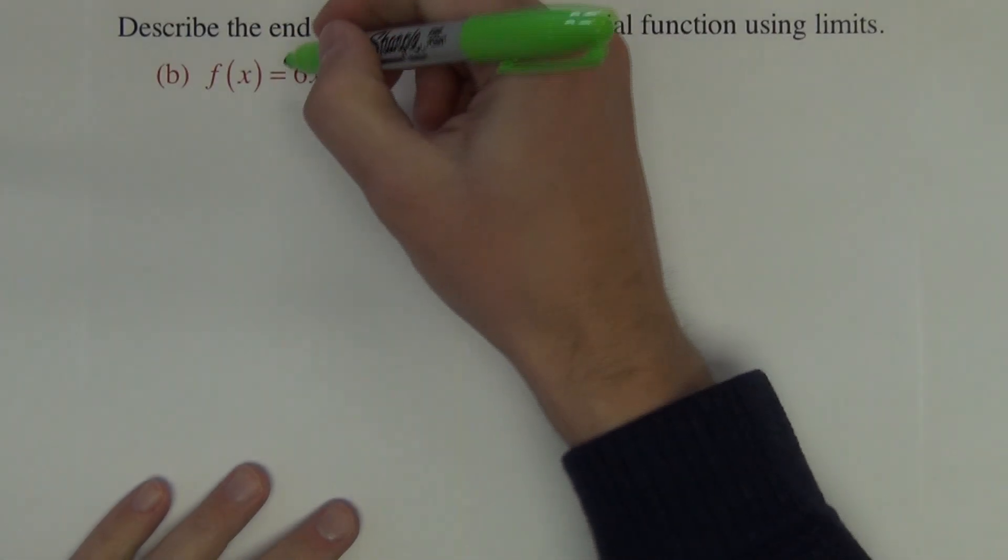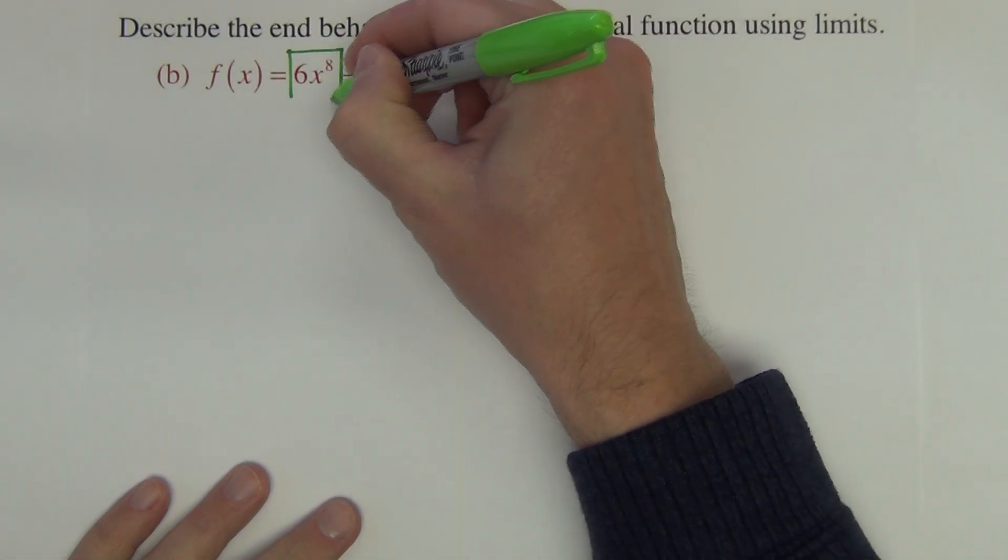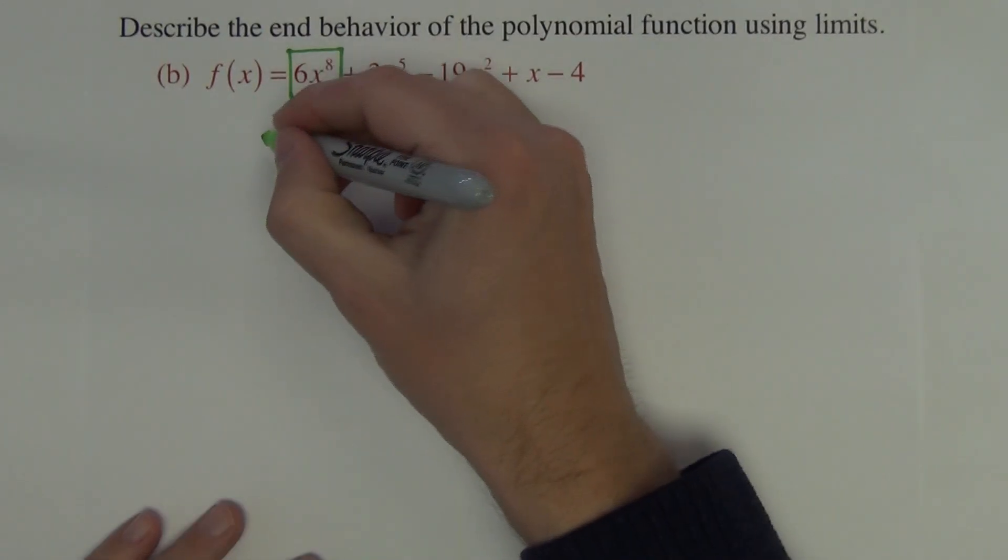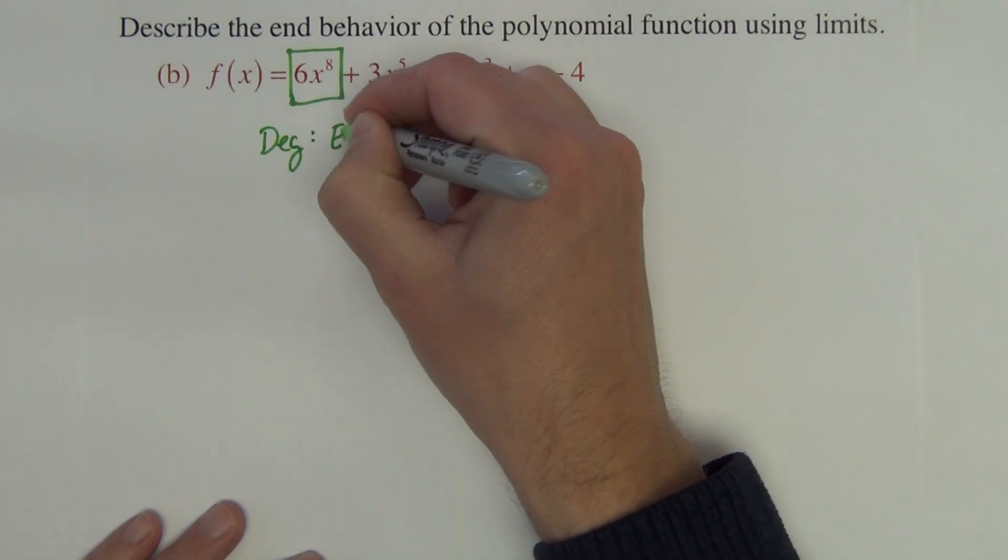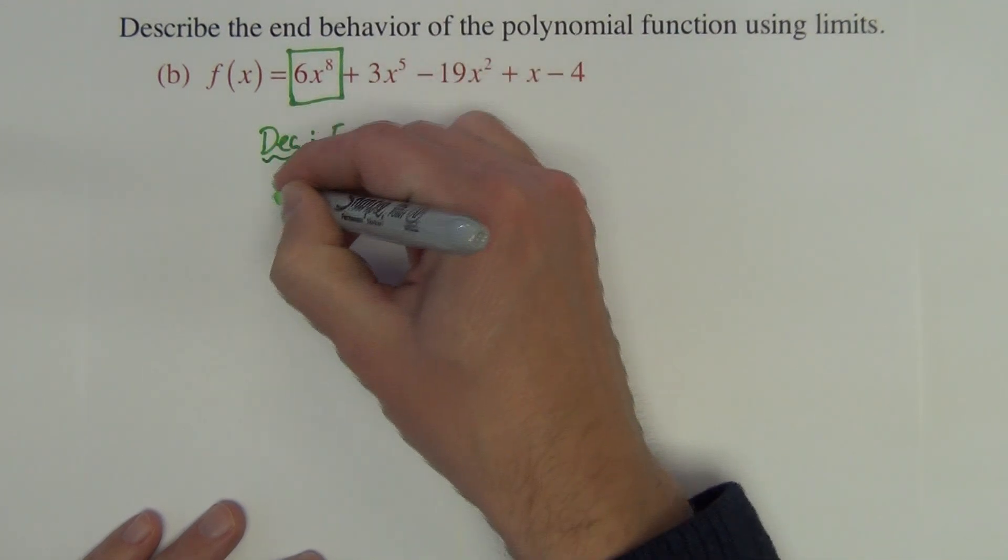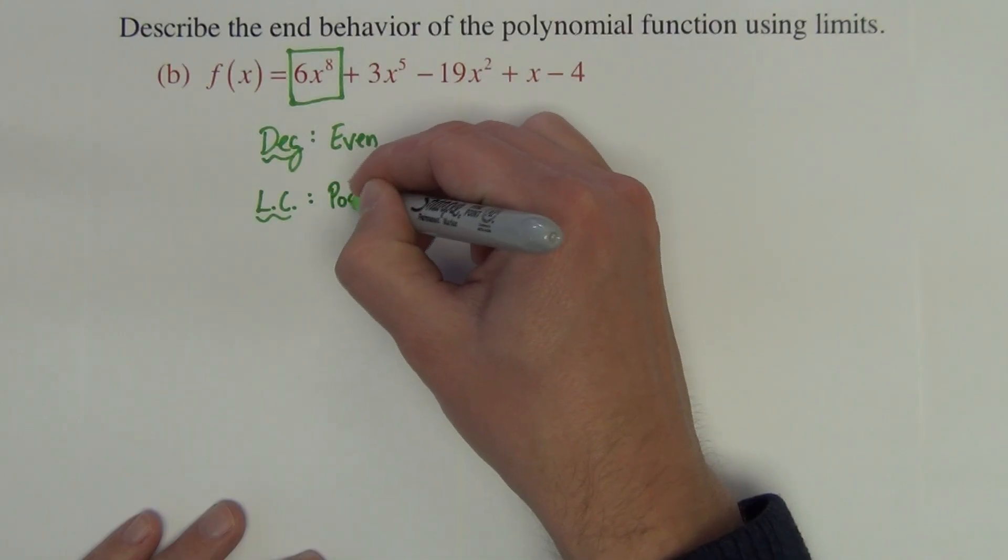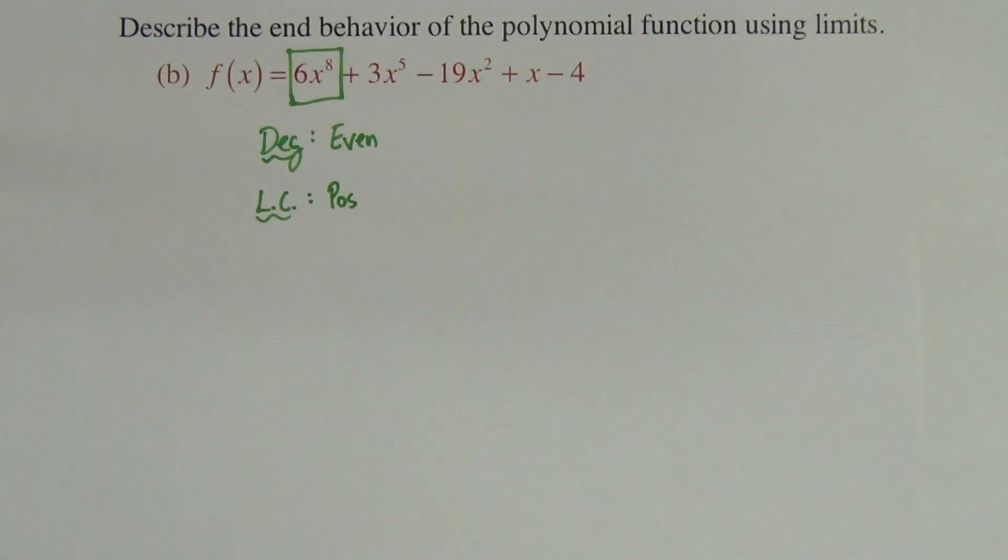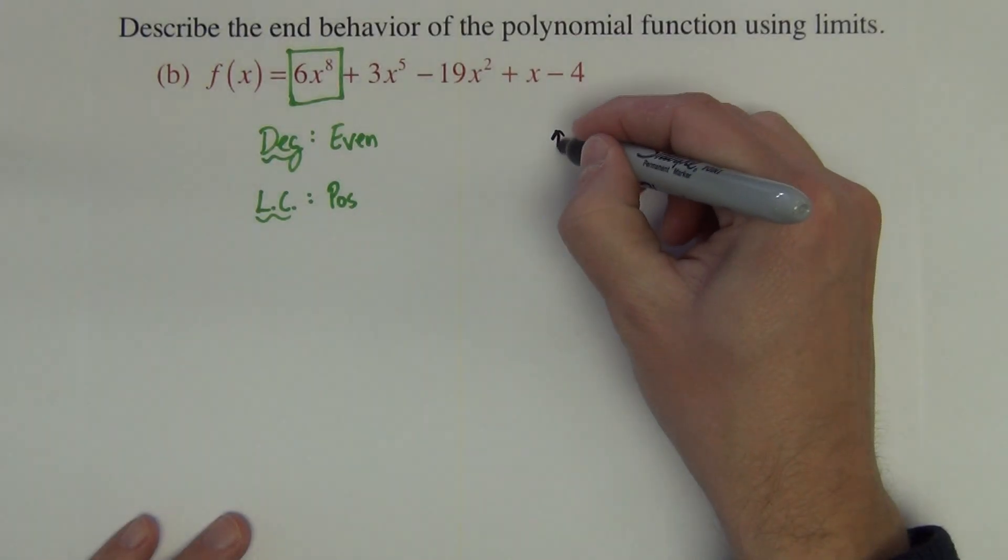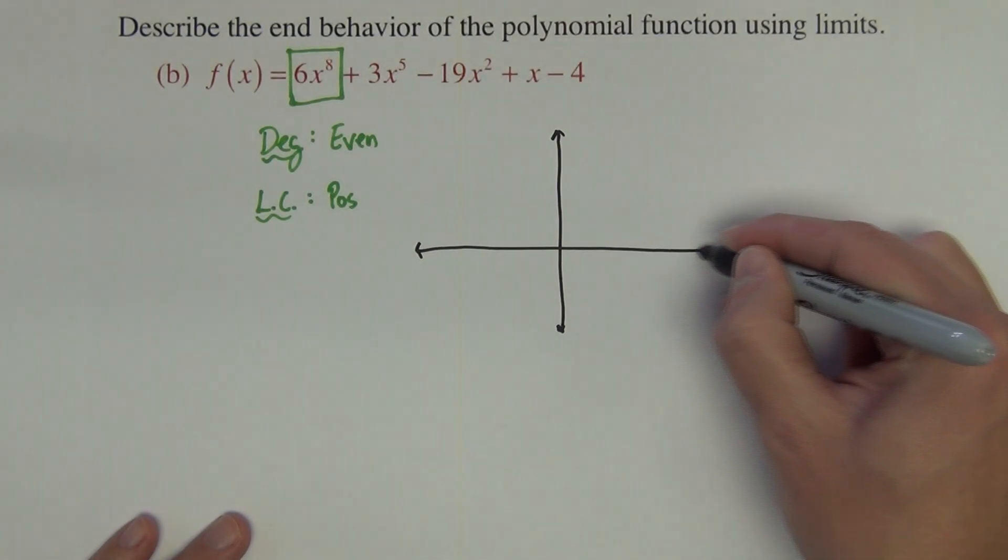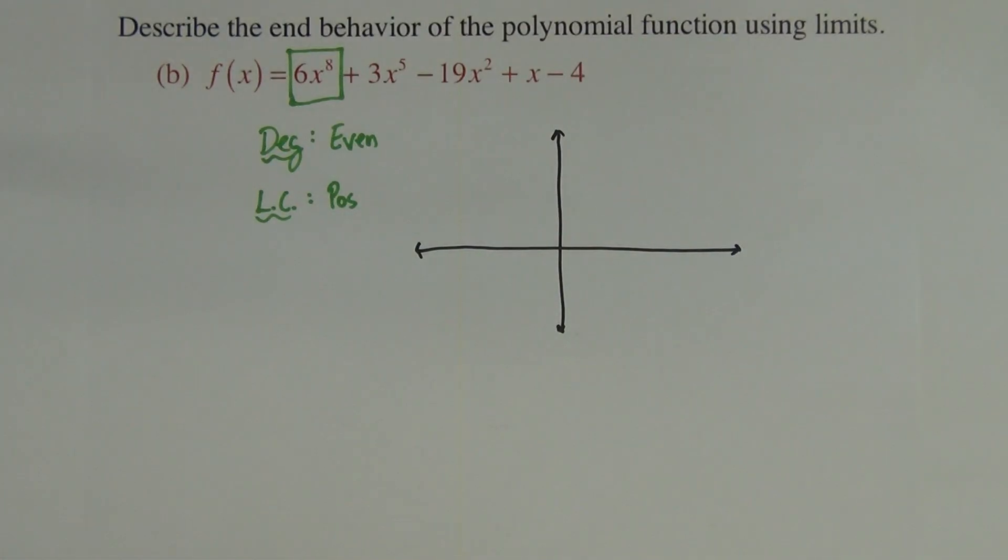On this next one again, we're looking at the first term of this polynomial function. So we see that on this first term that the degree is even and that the leading coefficient is positive. So even and positive, all polynomial functions that are even and positive have the same end behavior.